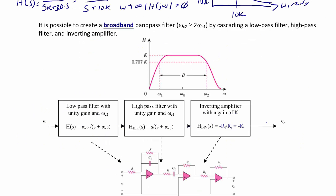It is possible to create a broadband band-pass filter where the second cutoff frequency is greater than two times the first cutoff frequency, by cascading a low-pass filter, a high-pass filter, and an inverting amplifier. The maximum magnitude is k, cutoffs are at 0.707k, and the bandwidth β equals ω2 minus ω1. The low-pass filter has unity gain and cutoff ωC2 with transfer function ωC2 / (s + ωC2). The high-pass filter has unity gain and cutoff ωC1 with transfer function s / (s + ωC1). The inverting amplifier has gain k = −Rf / Ri.